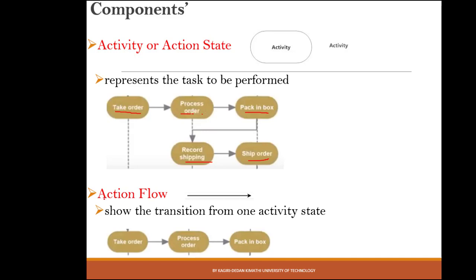The action flow shows how we move from one activity to another. For example, moving from 'take order' to the next activity. The action flow is represented by a solid arrow, and the direction of the arrow tells us from which activity we are moving and to which activity we are heading.